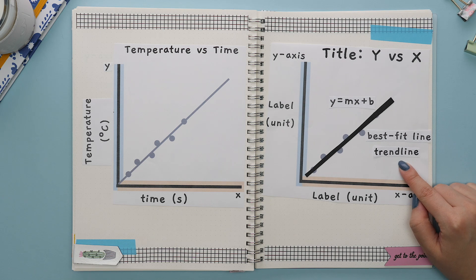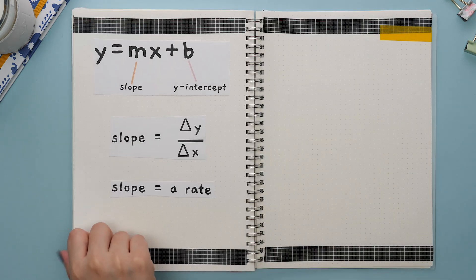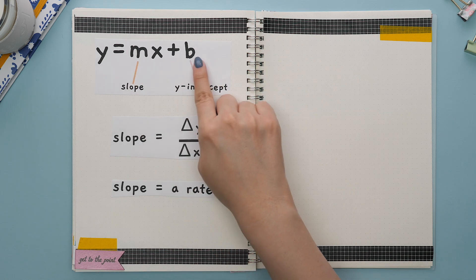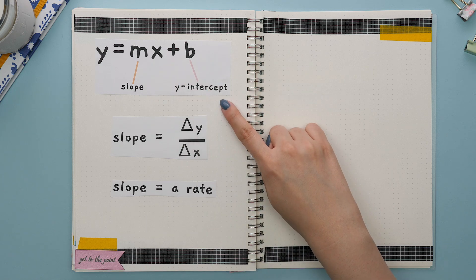You will also need to understand how to interpret the equation of this line. Let's go over the equation of a line, which is y equals mx plus b, where m refers to the slope and b refers to the y-intercept.